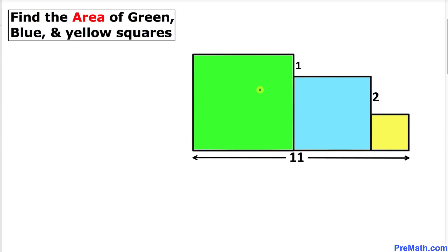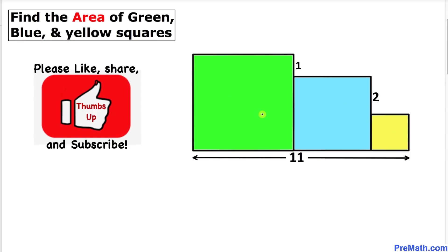Welcome to pre-math. In this video tutorial we have three squares of different dimensions. The height difference here is one unit, the height difference here is two units, and their base length is 11 units. Now we are going to calculate the area of the green, blue, and yellow squares. Please don't forget to give a thumbs up to this video.